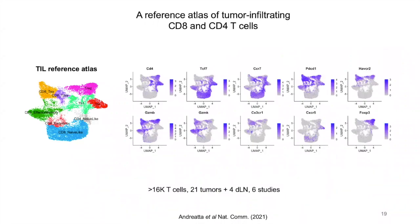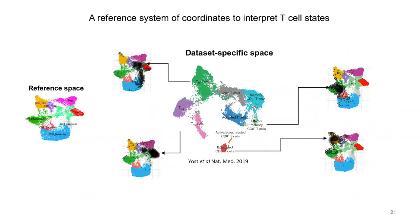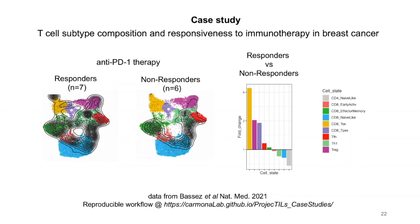Going back to cancer, we generated a second reference atlas, in this case of tumor-infiltrating CD8 and CD4 T cells by multi-study data integration and annotation. With these new tools, we can now address the problem of defining consistent T cell states across studies. We can project cells from any study and interpret their states in a reference system of coordinates. For instance, we can look at a T cell dataset by Yoast and colleagues and the cell states the authors define in their own transcriptional space, and see how each of these states localize in our reference space. Finally, we can start mining public data and asking important questions, such as what are the immunological differences in tumors from patients that respond compared to those that don't respond to cancer immunotherapies.